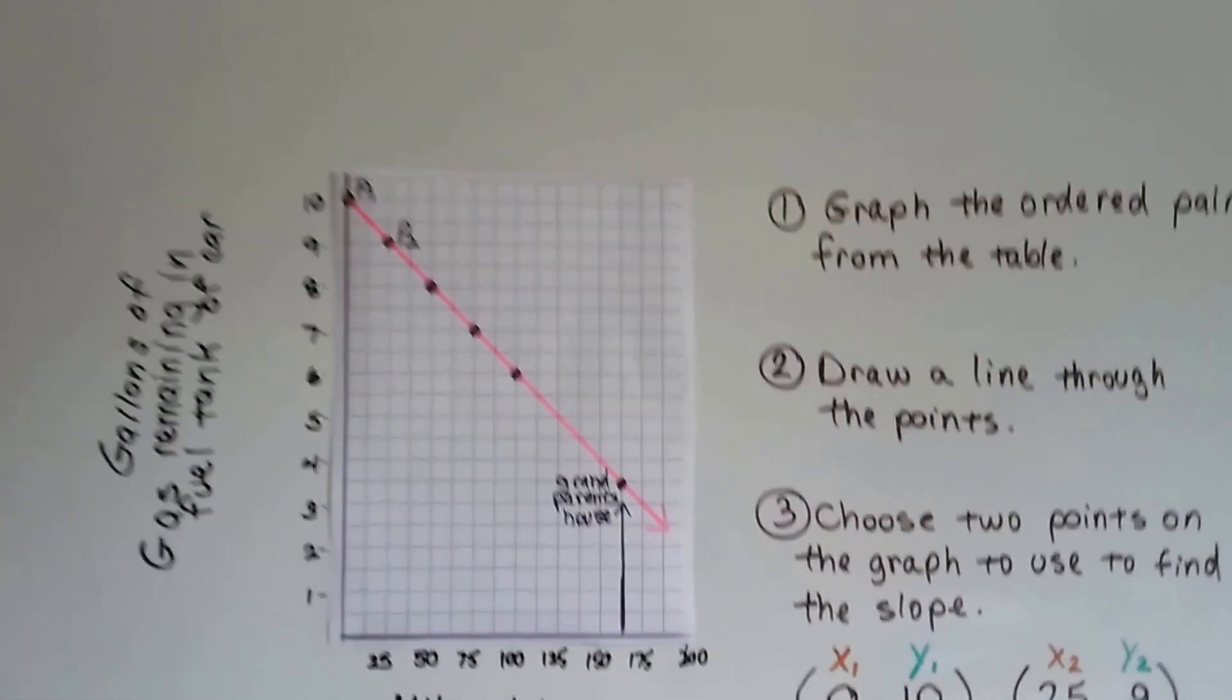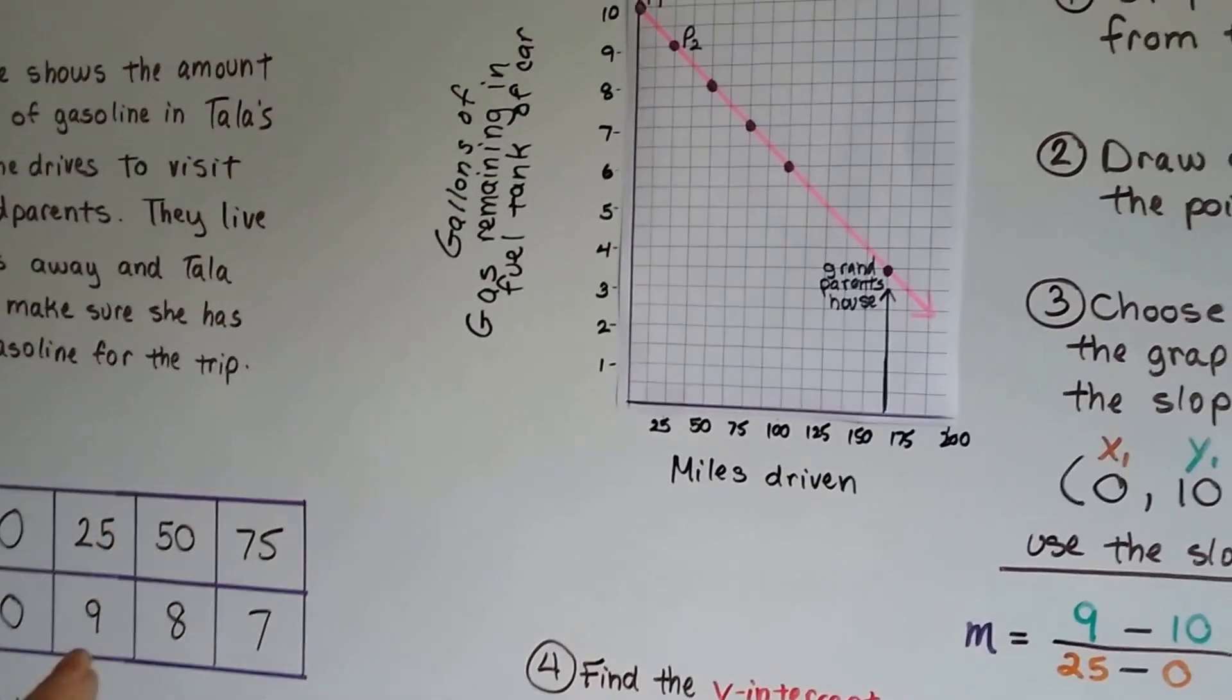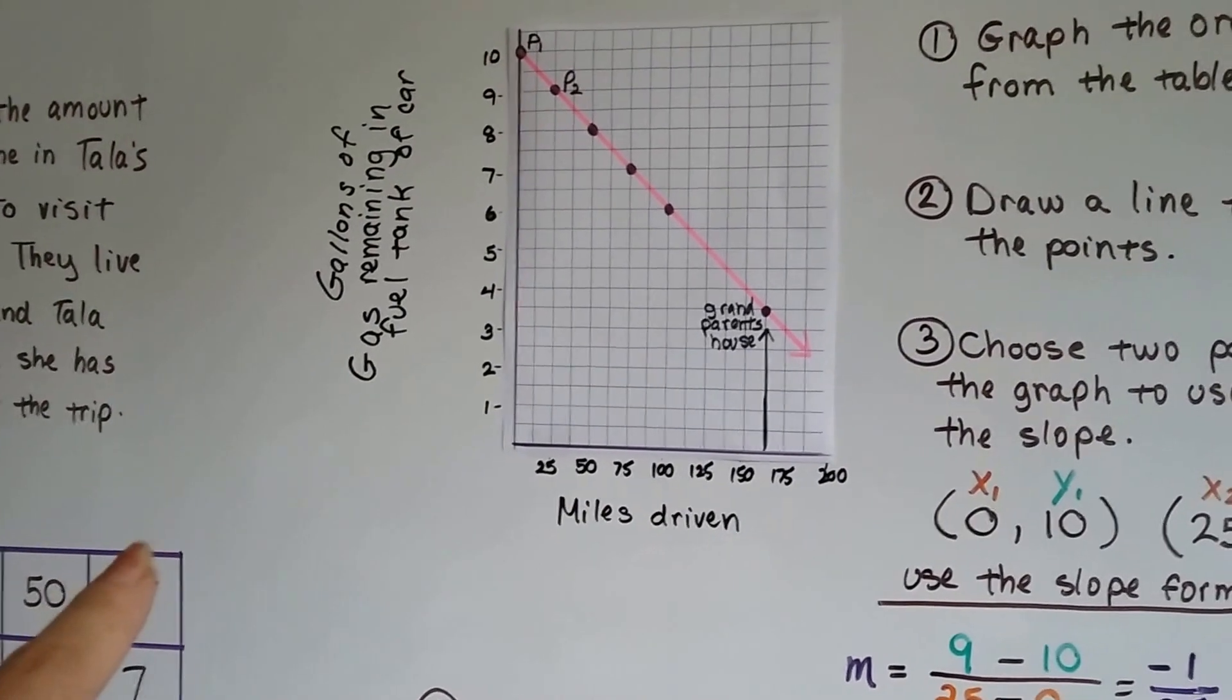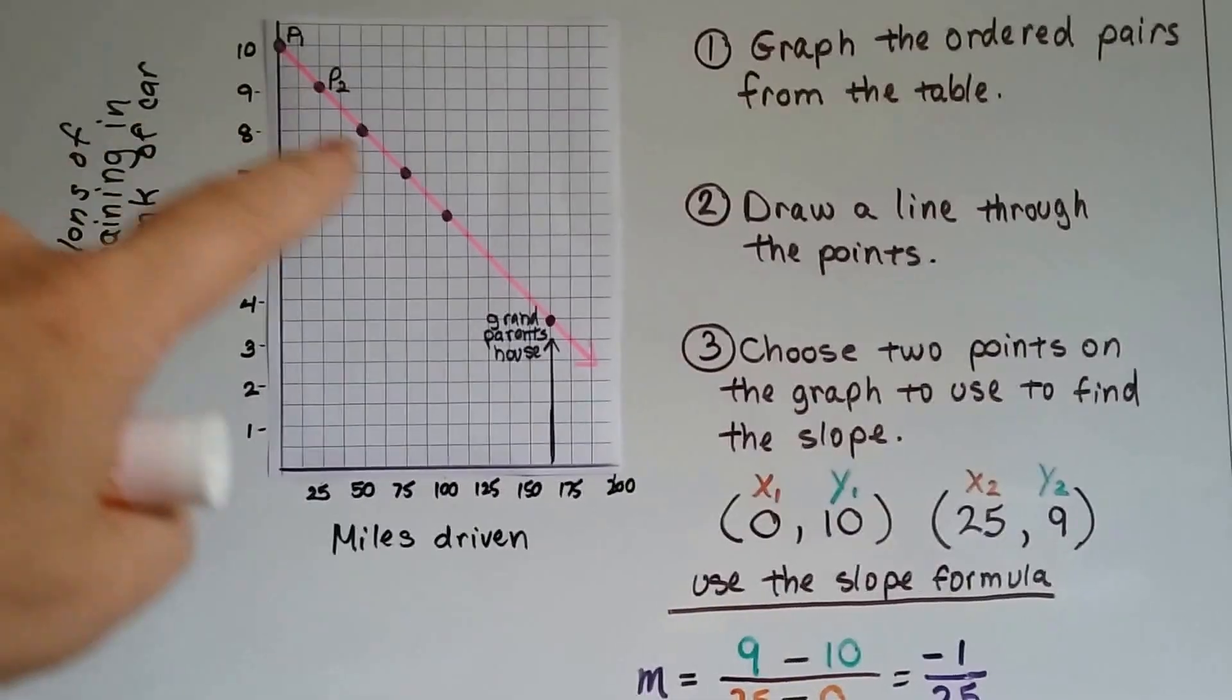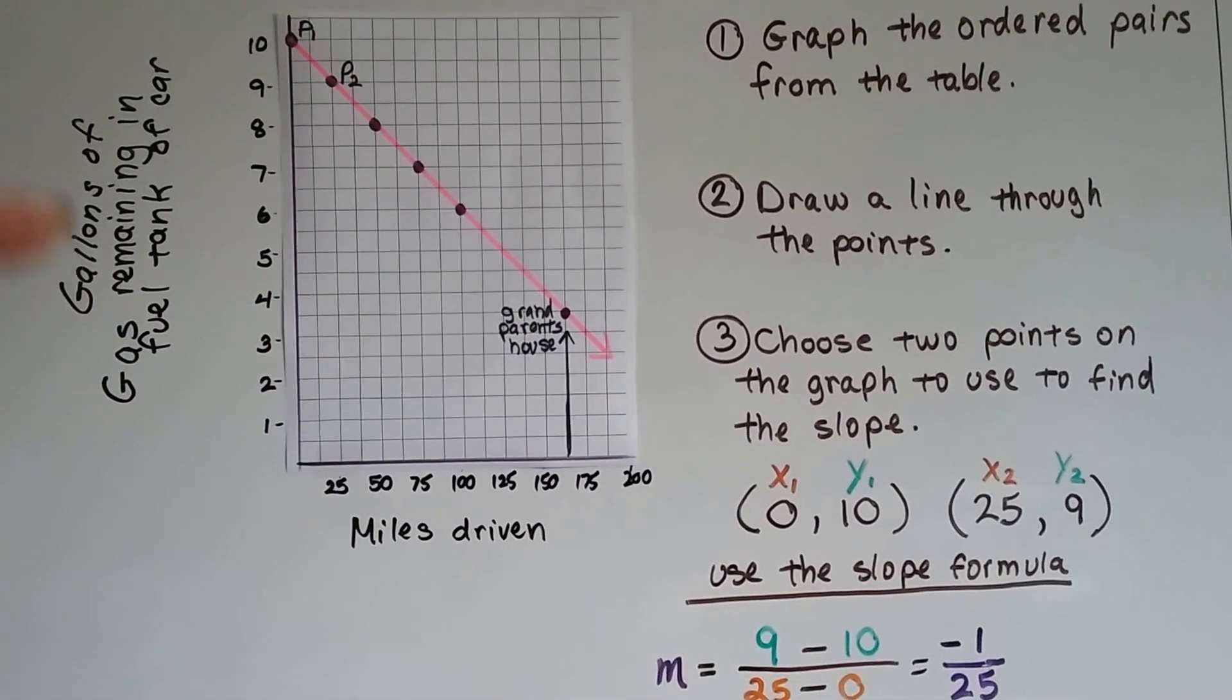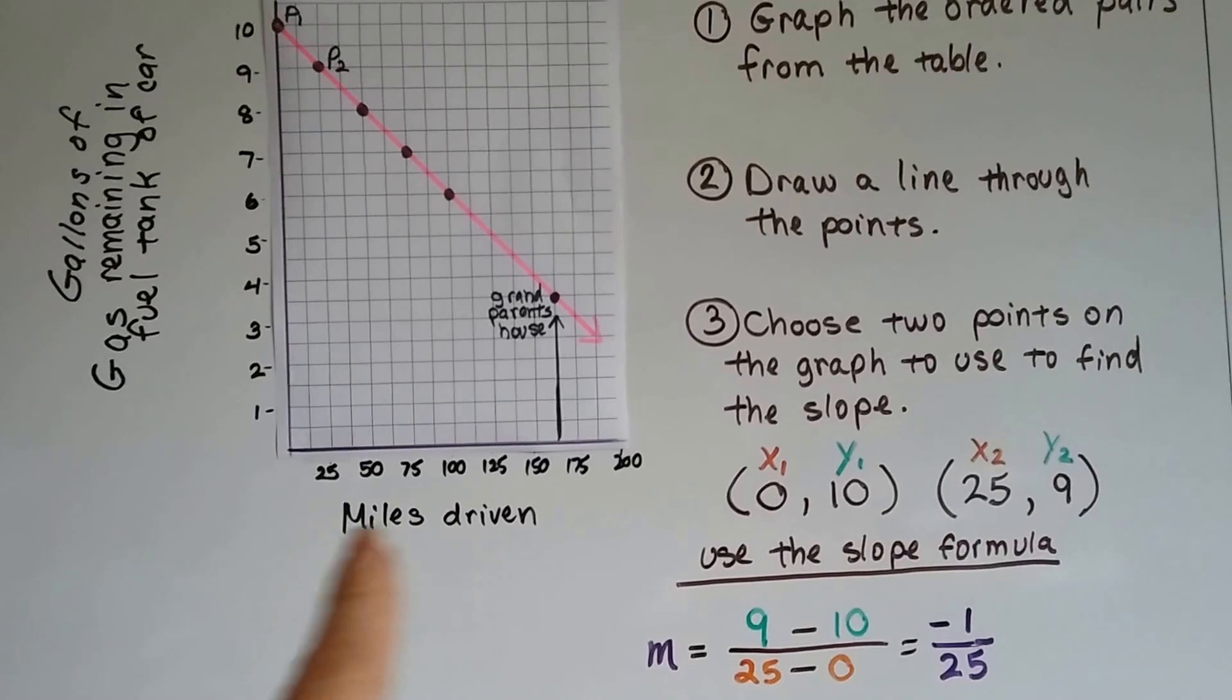The first thing we're going to do is graph the ordered pairs from the table: (0,10), (25,9), (50,8), (75,7), and we graph them. We draw a line through the points. These are the gallons of gas remaining in the tank of her car, and here's the miles driven.